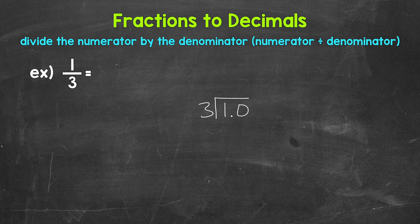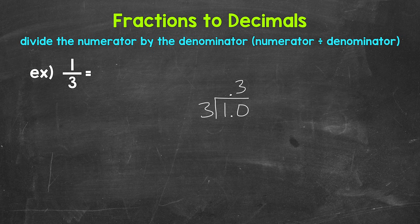Once we have the decimal and the 0, we bring the decimal straight up into where the quotient — the answer — will be. Now we can think of this as 10 divided by 3. How many whole groups of 3 in 10? Well, 3. That gets us to 9. So we put the 3 above the 0, since we used that 0 and thought of this as 10 divided by 3. This will line us up correctly. Now we multiply: 3 times 3 is 9.